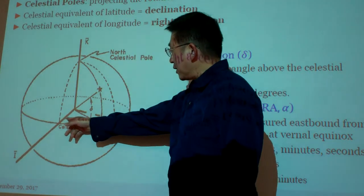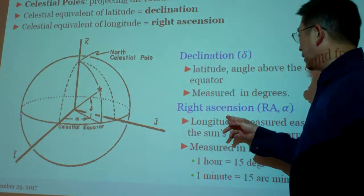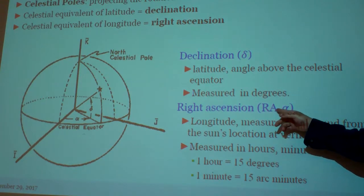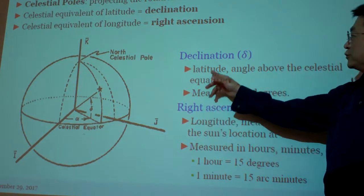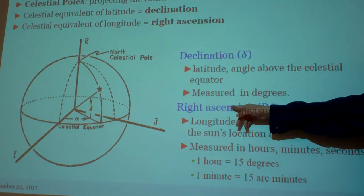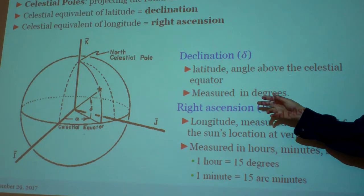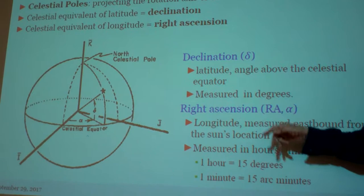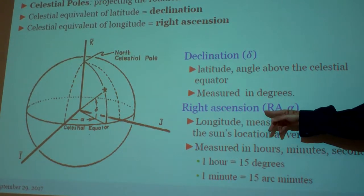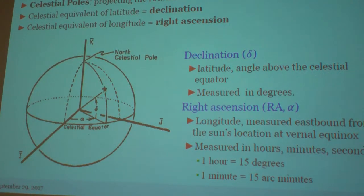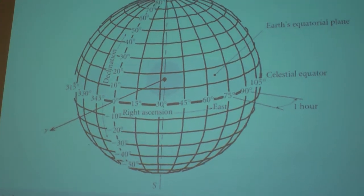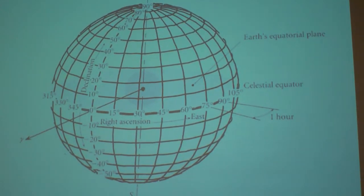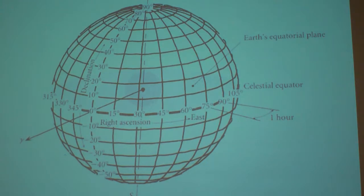Again, we have the right ascension — sometimes people call it RA — and we also measure the altitude called declination. These two terms are used in STK software. Basically you can think of this as longitude and latitude on the Earth's globe.